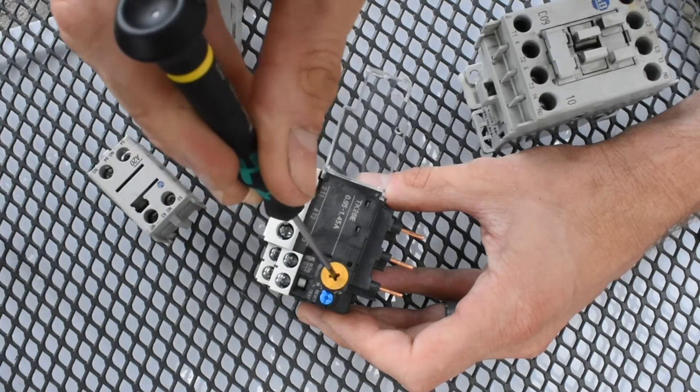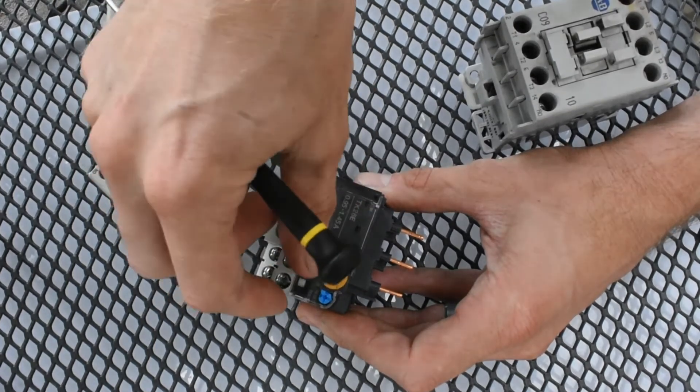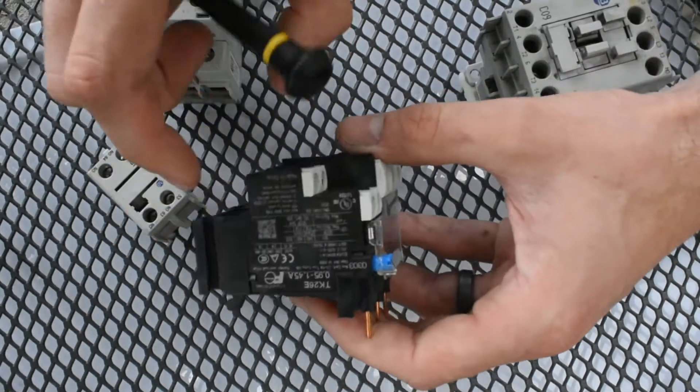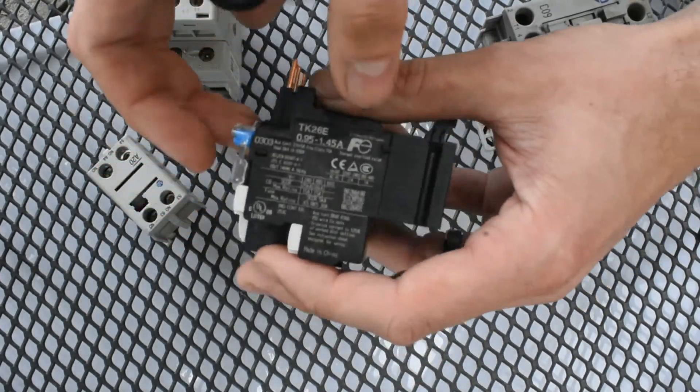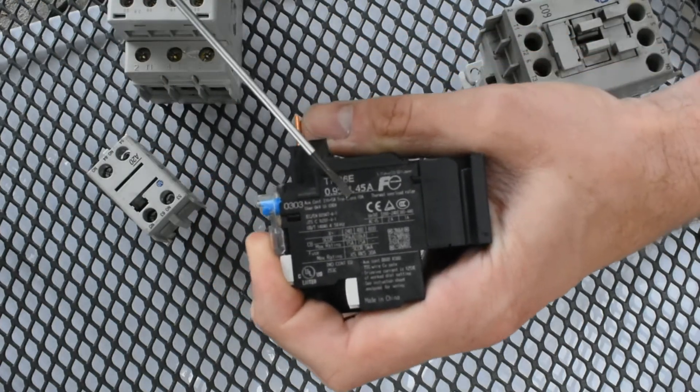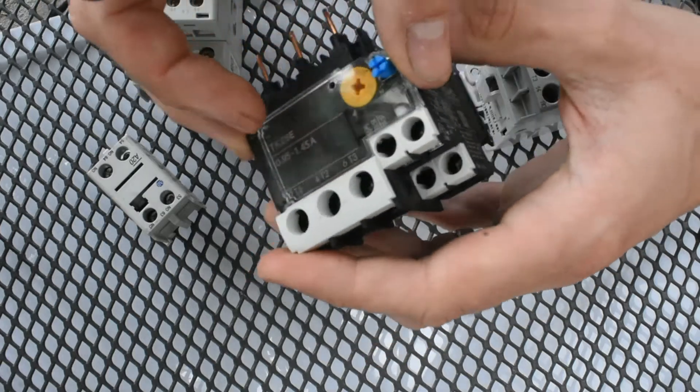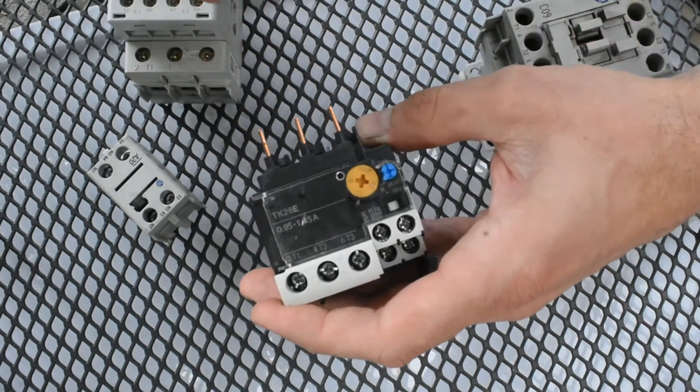You'll notice that this overload relay, as well, has a current adjustment. Now, this one has no selector switch for trip classes. So, if I look at the labeling on the side of it, let's see, here it says class 10. So, this is a trip class 10, which means 10 seconds of high current before it's going to trip.